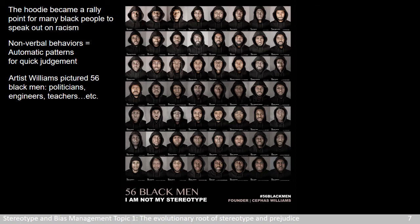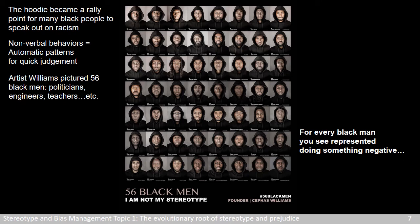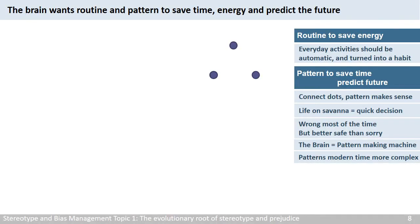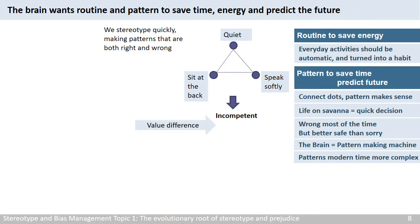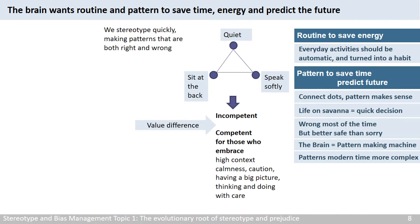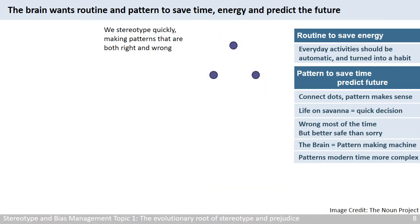This is one of those voices — a project by artist Williams. He pictured 56 Black men in hoodies. They are politicians, engineers, or teachers. The message is: 'For every Black man you see represented doing something negative, there are 56 of us that aren't.' In everyday life, we stereotype quickly, making patterns that are both right and wrong — to save time, energy, and predict the future. Someone who is quiet, sits at the back, and speaks softly fits into the pattern of being incompetent. It is here that values play out, because the same pattern can also mean competence for those who embrace high context dependence, calmness, caution, and thinking with care. Stereotypes can be positive as well — a young Asian male would be assumed good at math.